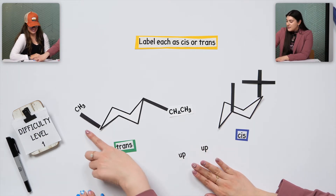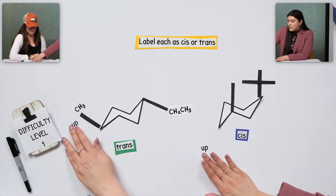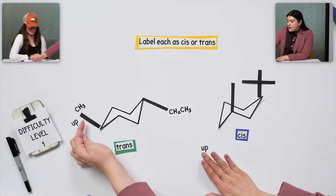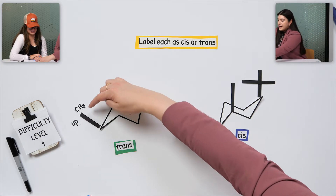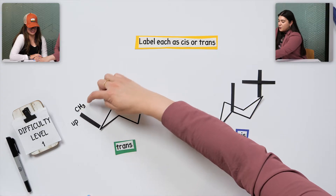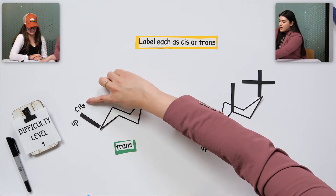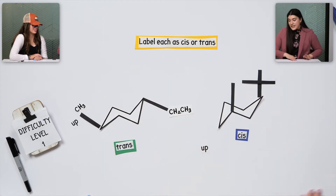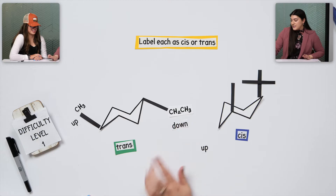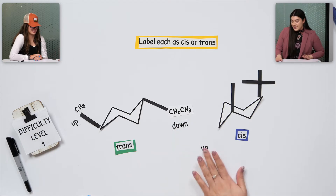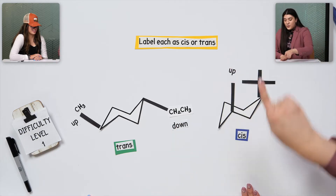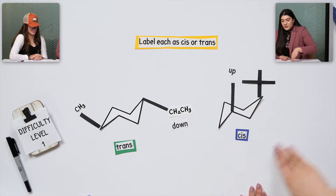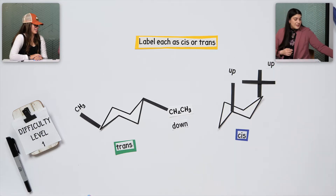You said that this is pointing up. We're really just following the direction of where this is headed — think of the arrowhead towards whatever is at the end. And then this is going down, they're opposite, that's trans. And then this one you said they're both pointed up and up which makes it cis. Exactly.